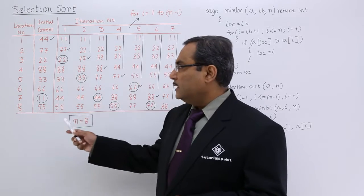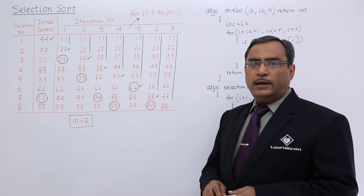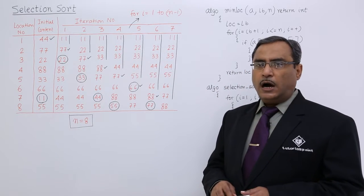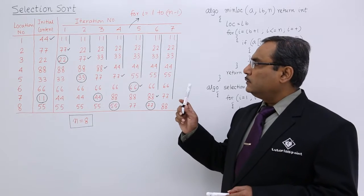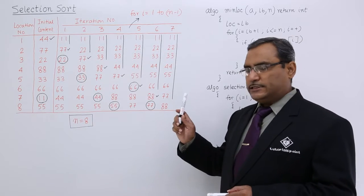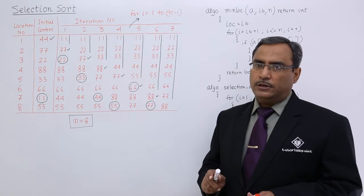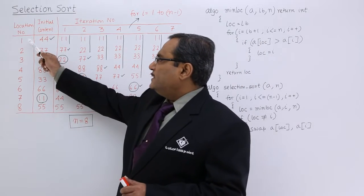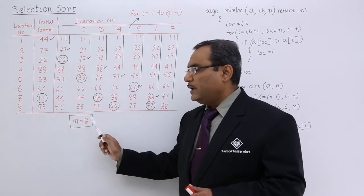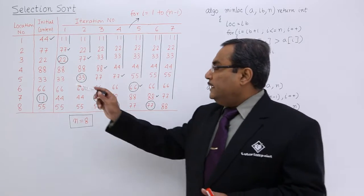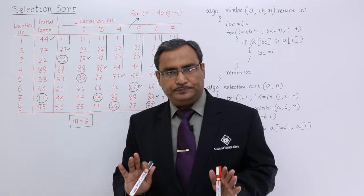So here is the example. Let us suppose we are having one array consisting of some unsorted data, and here we are using selection sort to sort them in ascending order. Let us suppose the array is having 8 locations, so the value of n is equal to 8, and it is initially containing this set of unsorted data.